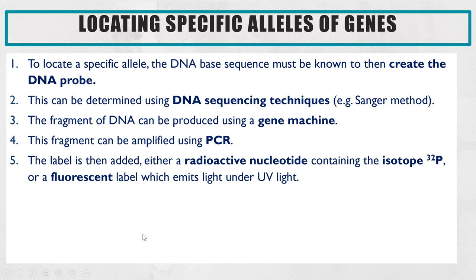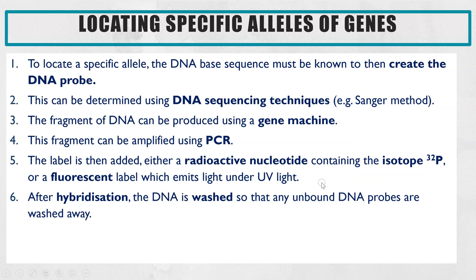You've now got multiple DNA fragments which are single-stranded, and you'll then need to add your label. This is either going to be a radioactive nucleotide — a nucleotide that contains the isotope 32P (phosphorus) — or you would add a fluorescent label so that when you put the DNA under UV light it will emit light or fluoresce. This is so you can easily identify if the probe is present and therefore if a patient does have that particular allele.